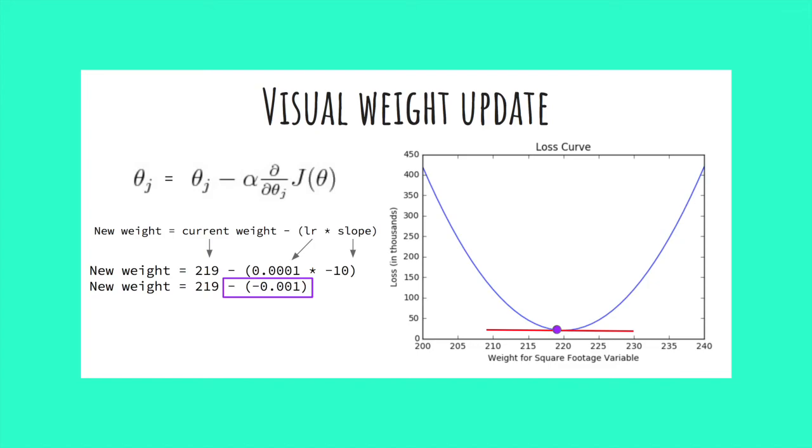So whereas before our weight change was 3.4, our weight change now is only 0.001. That's a massive difference. So just as a little nugget of information, you should understand that as we move down the loss curve, despite the learning rate staying the same, your step size will still get smaller, which is a really great feature.